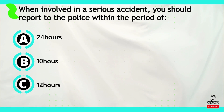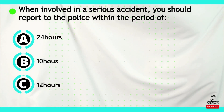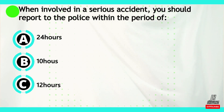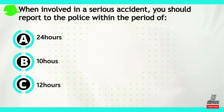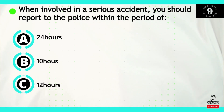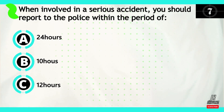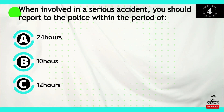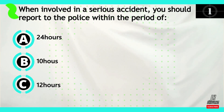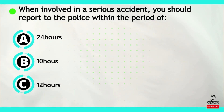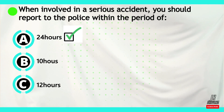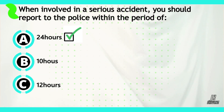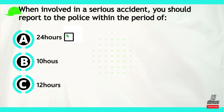Question number six: when involved in a serious accident, you should report the case to the police within a period of — option A: 24 hours, option B: 10 hours, or option C: 12 hours. The correct answer is option A — when involved in a serious accident, you should report the case to the police within 24 hours.